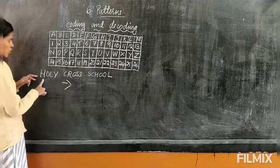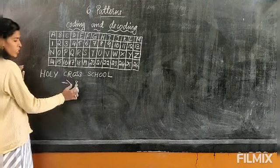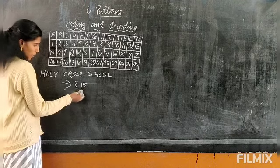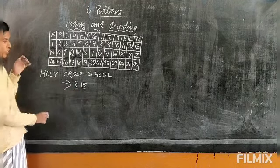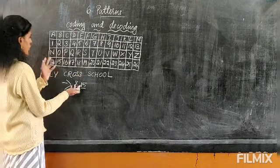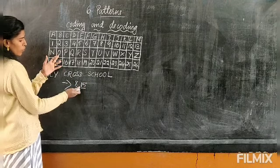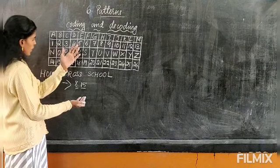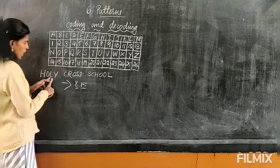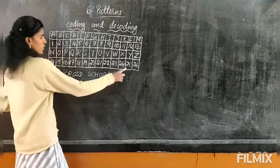H can be written as 8. For O, the code is 15. Note that 1 and 5 cannot be separated, so we underline them together. If you don't underline, you won't know if it's 1 and 5 separately — where 1 represents A and 5 represents E — or 15 together representing O. That's why we underline these two digits as one code. Next, L is 12, and Y is 25. So this encodes HOLY.